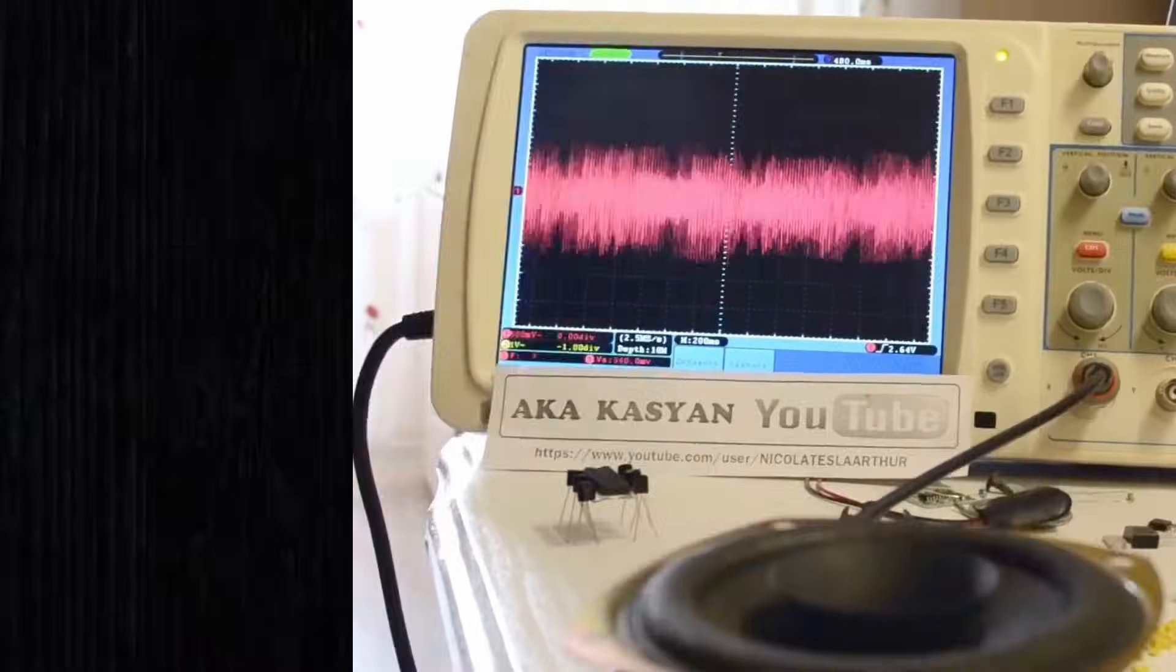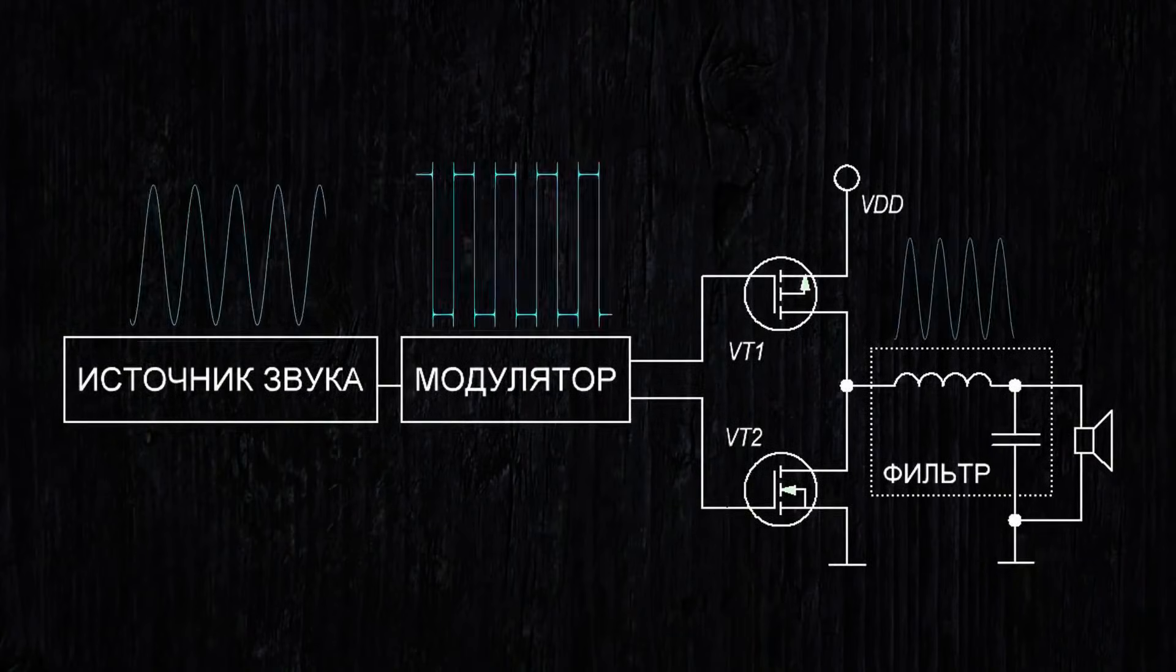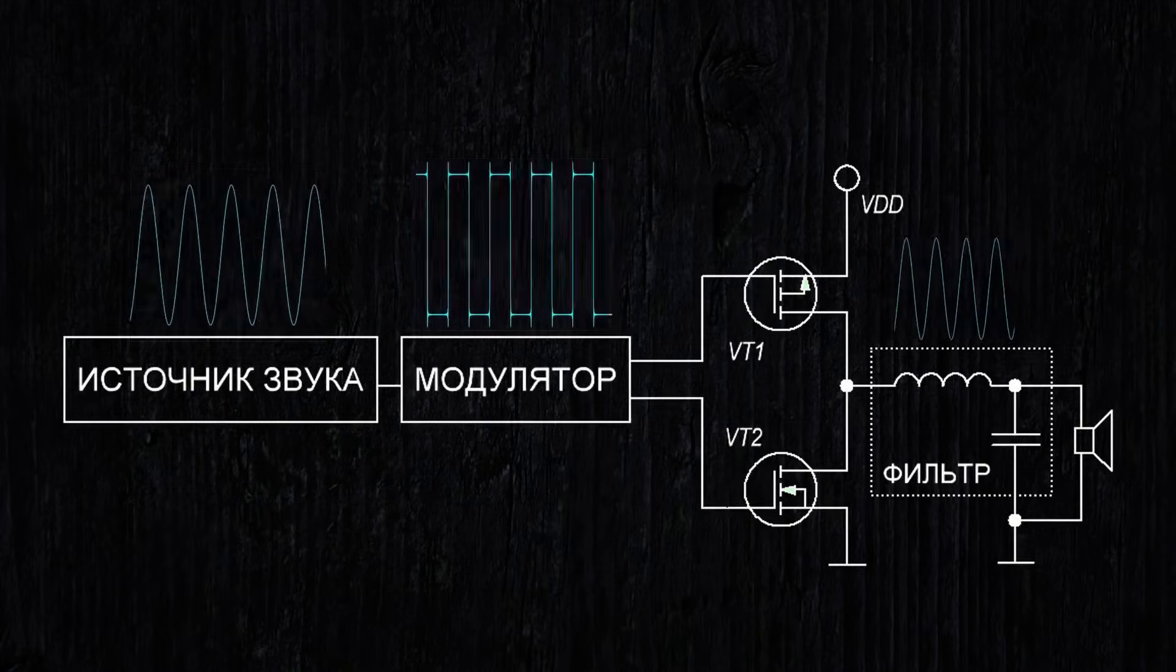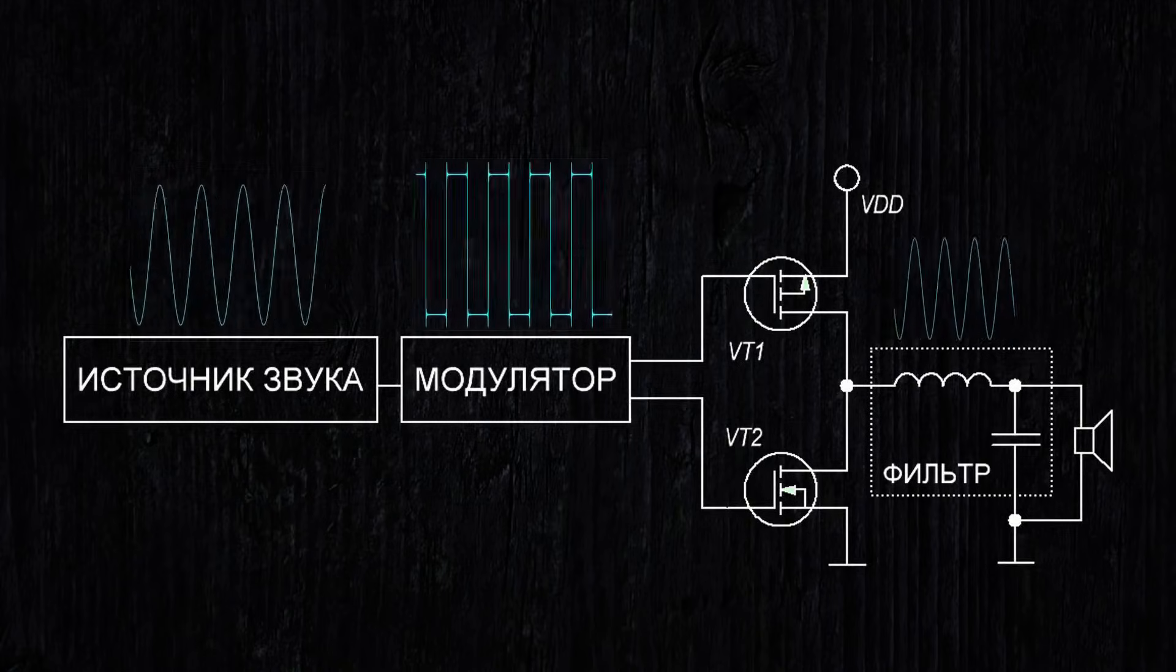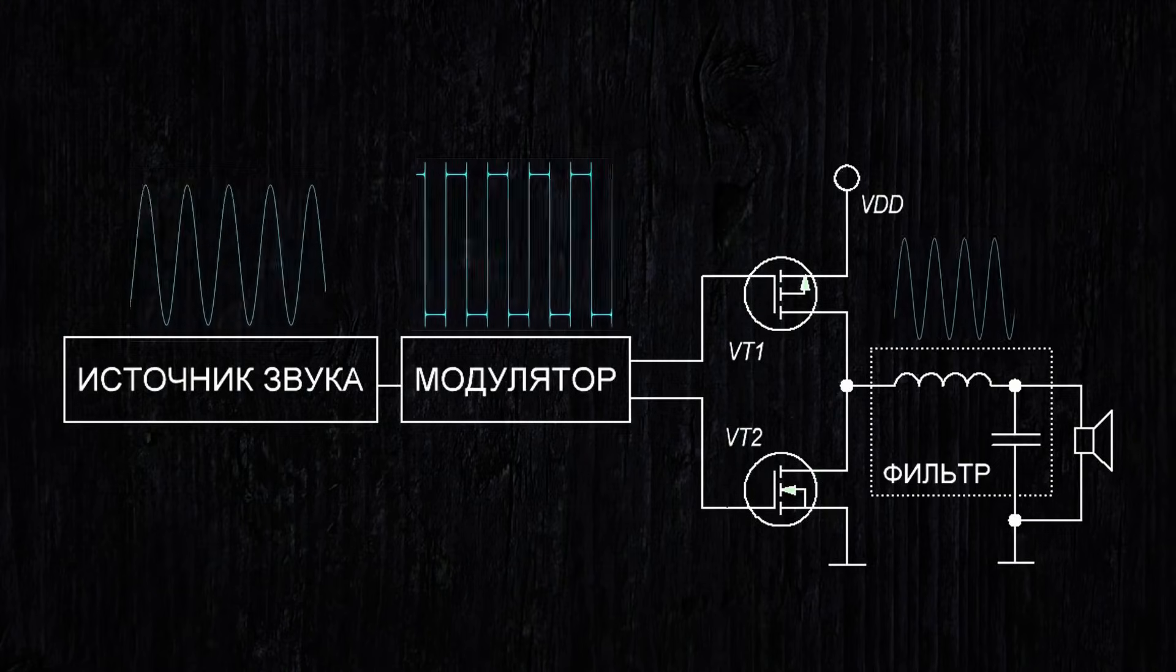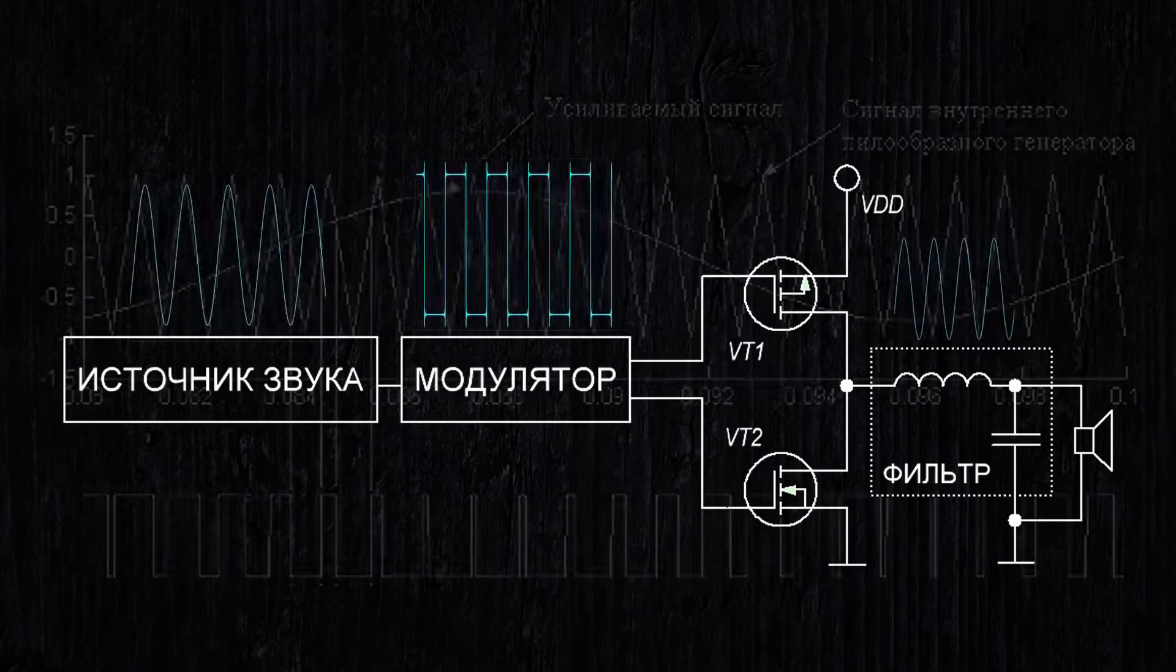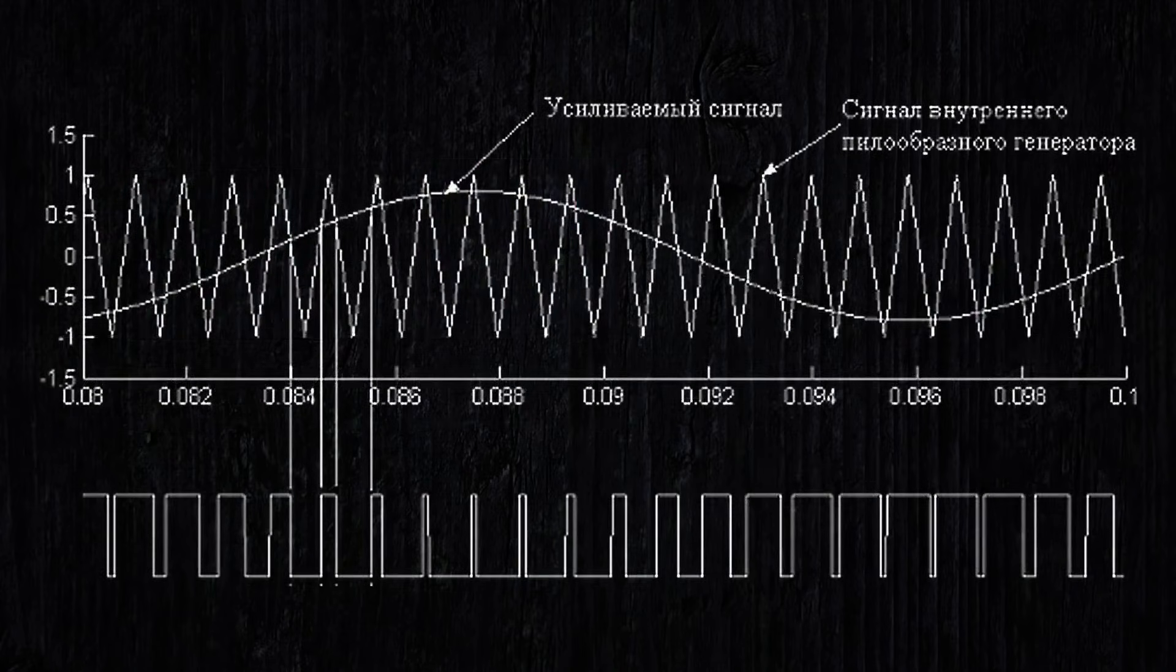The distinguishing feature of class D amplifiers, compared to other types of amplifiers, is the switching mode operation of the output transistor stage. The input signal modulates a high-frequency digital signal, meaning a high-frequency digital signal is transmitted to the load, where the pulse width or pulse density is proportional to the input amplitude.